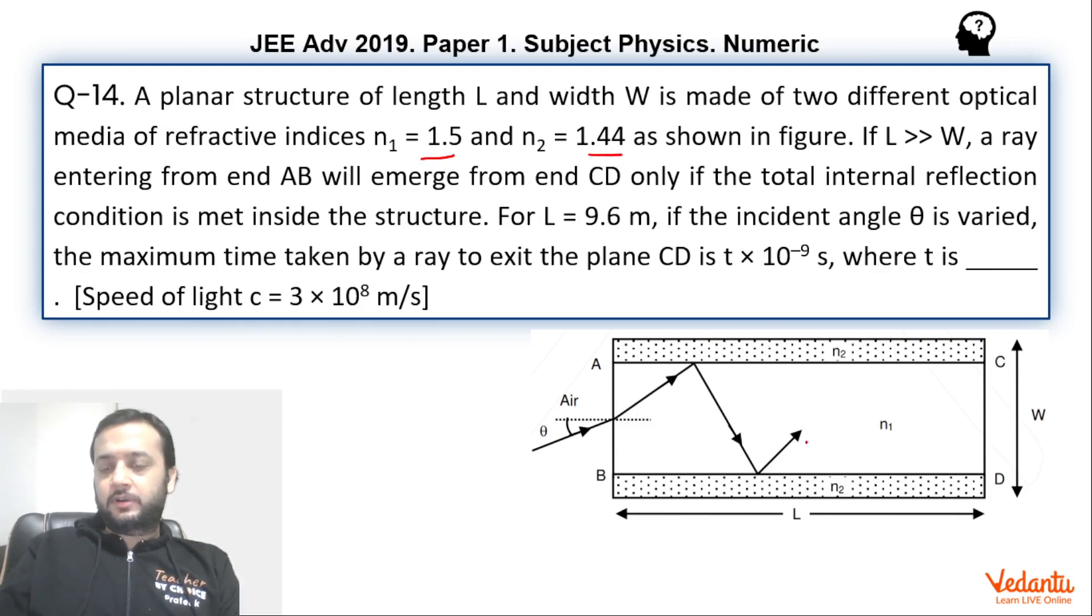It is said that we want the ray to come out from this end, so that means the ray must suffer TIR at every possible junction inside this. So what can be the maximum possible time taken by the ray in order that it enters from this AB and exits from CD, and speed of light in vacuum has been given as 3×10^8.